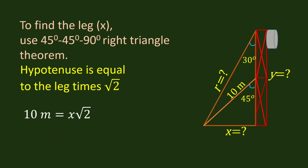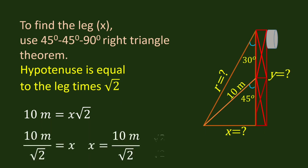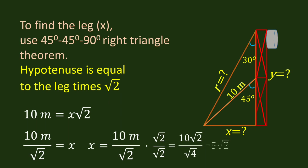We want to find x, so we divide the equation by the square root of 2 and we get 10 over square root of 2. That's the value for x. But we want to avoid the square root or radicals in the denominator, so we will rationalize the denominator by multiplying by square root of 2 over square root of 2. Our answer is 5 square root of 2.